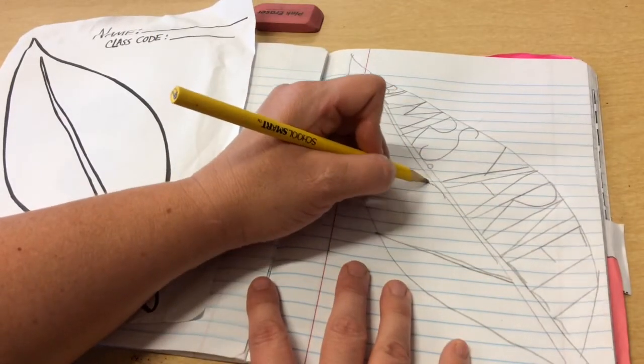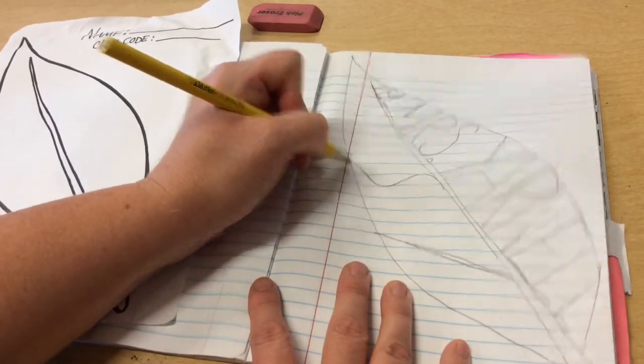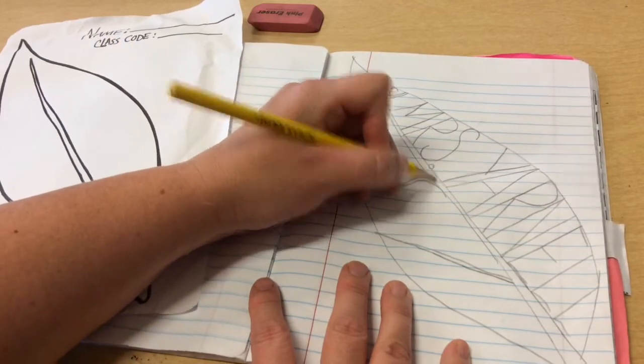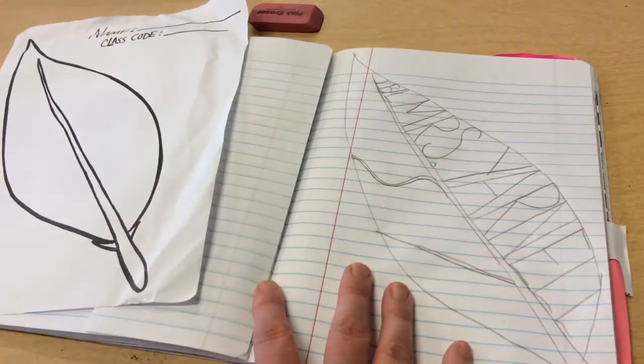Now this time, maybe I'll use a curved line. And again, I think I'll make it thick so it stands out a little bit. So I have one, two, three spaces.